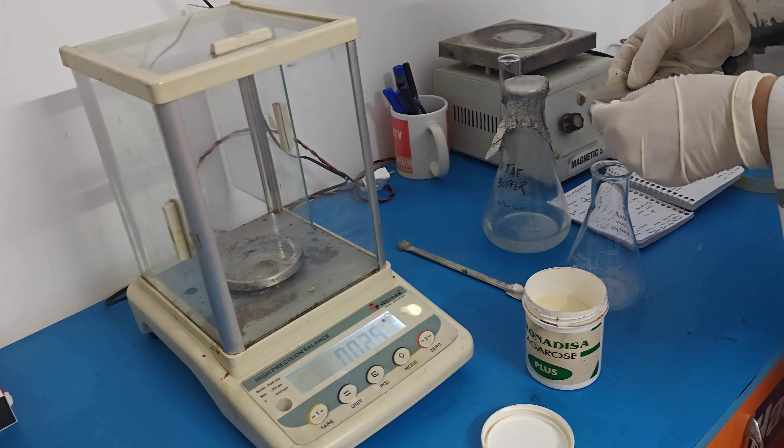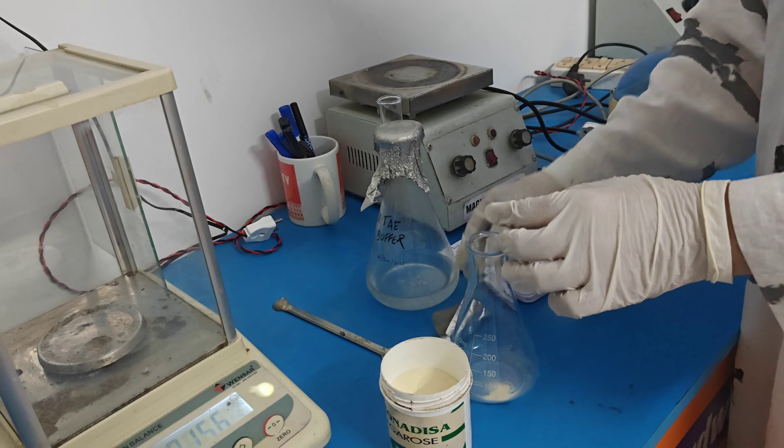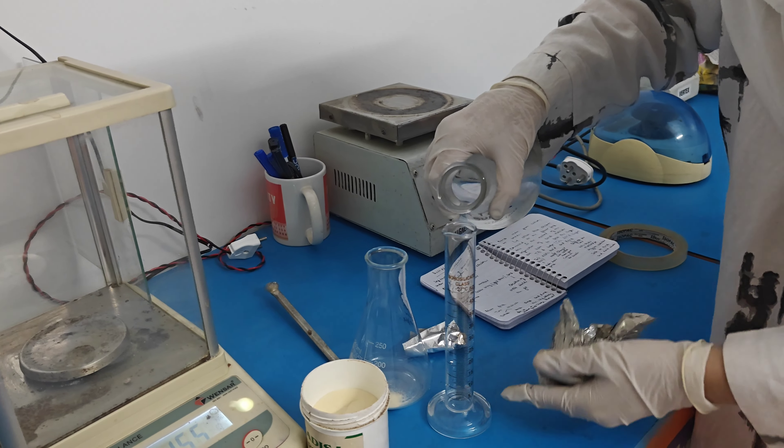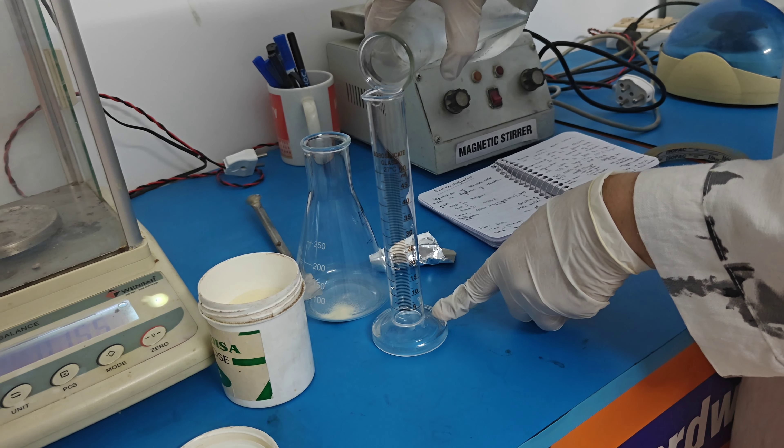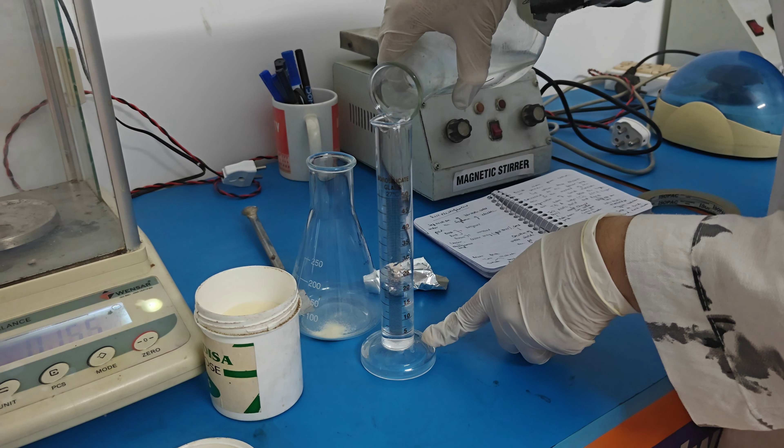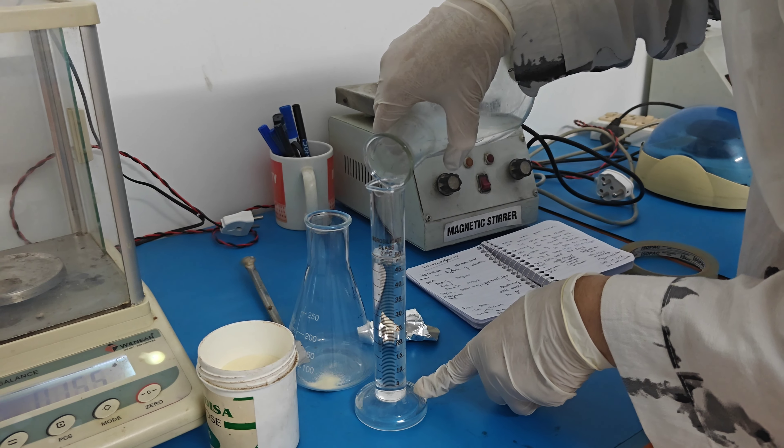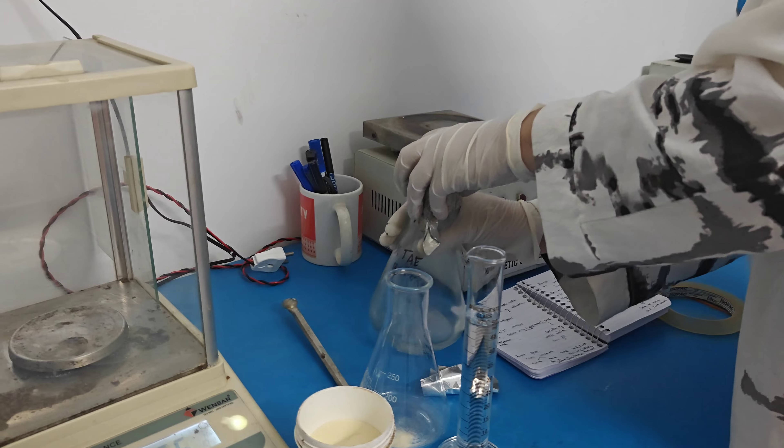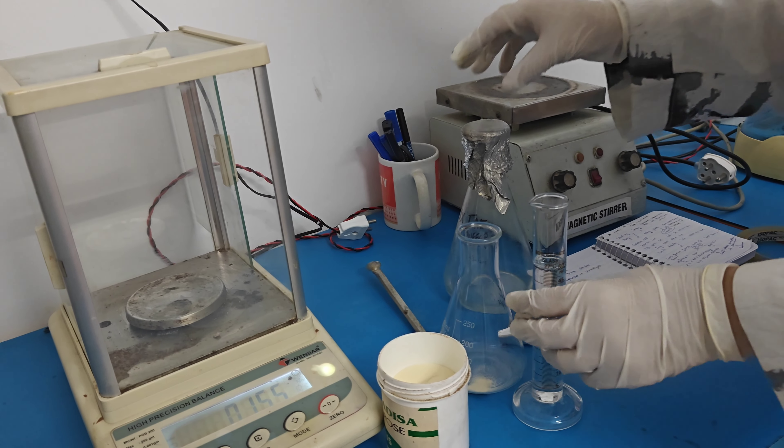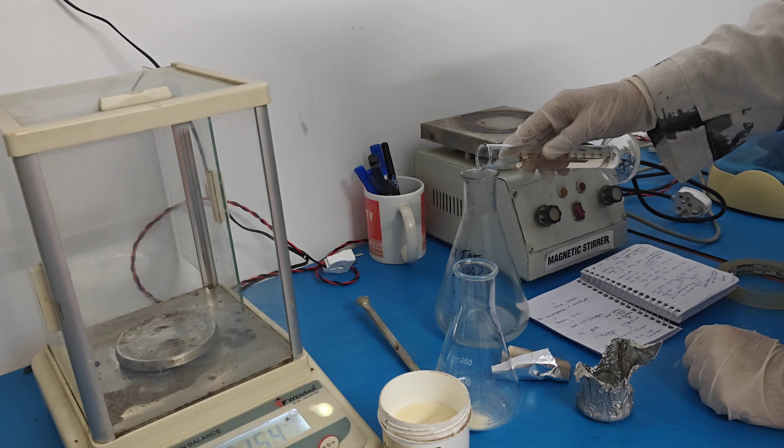Now transfer the agarose gel into a conical flask and add 50 ml 1X TAE buffer. So we have to add only 25 ml of TAE buffer instead of 50 ml.